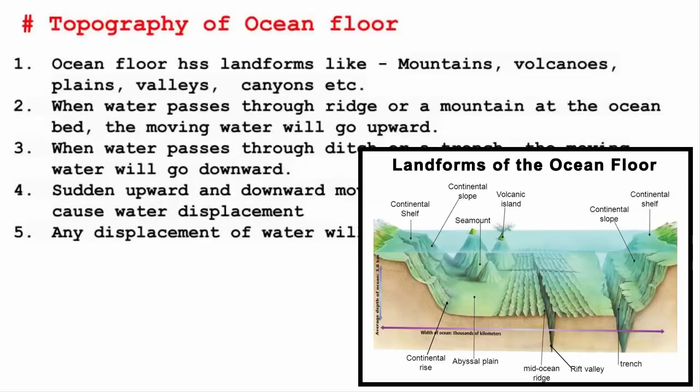The sixth factor is topography of the ocean floor. The ocean floor contains all of the geographic features that can be found on land masses, like mountains, volcanoes, plains, valleys, and canyons. These are called deep ocean landforms.